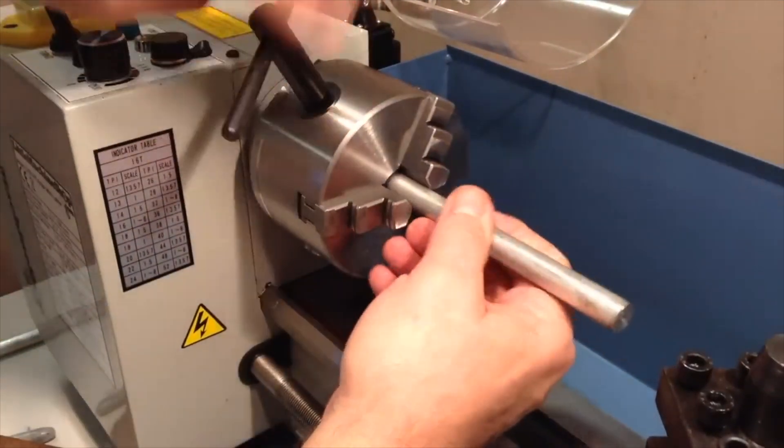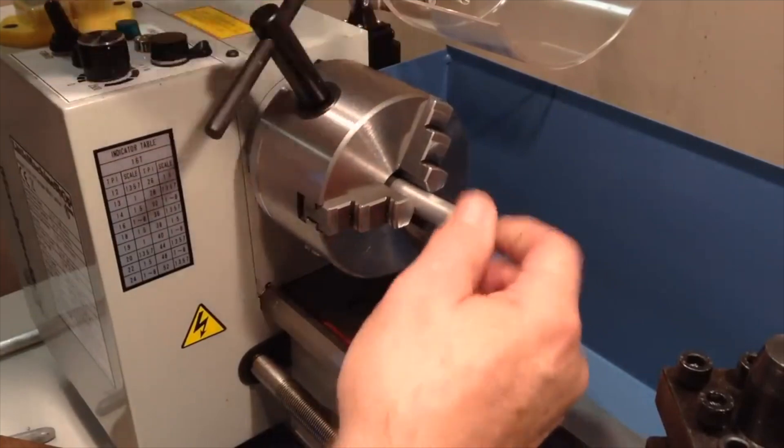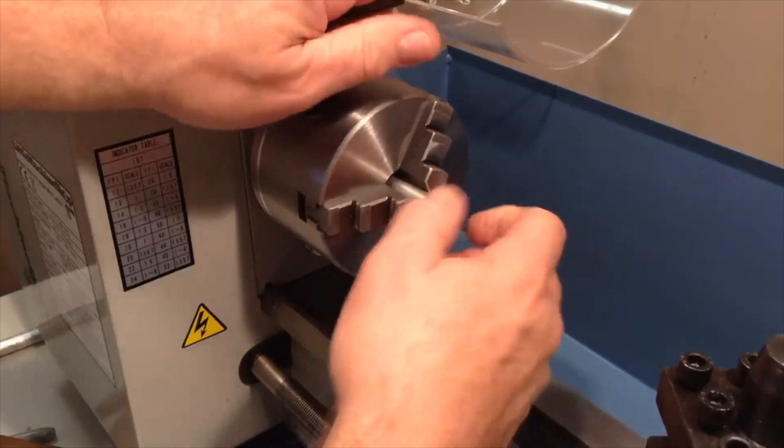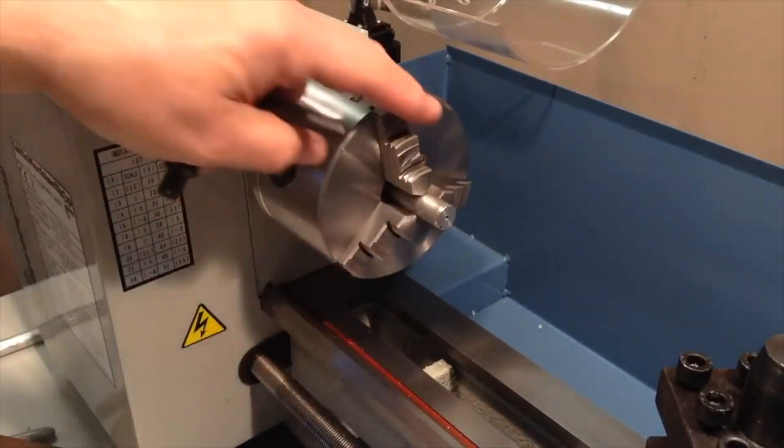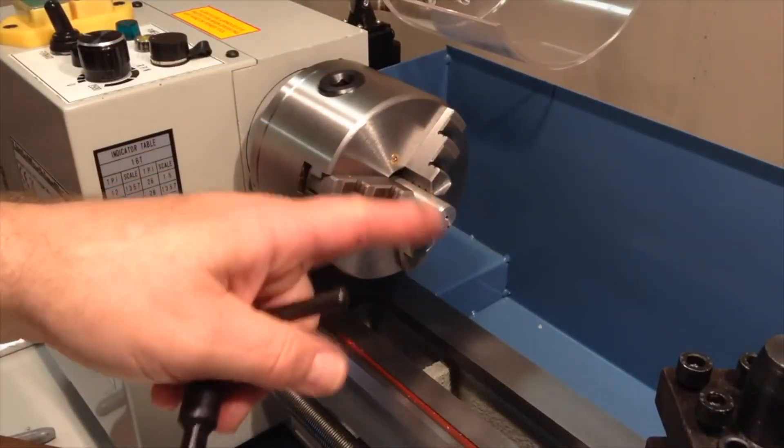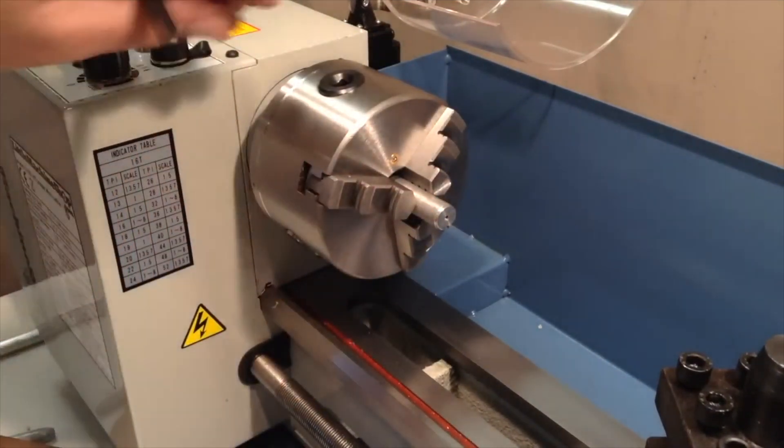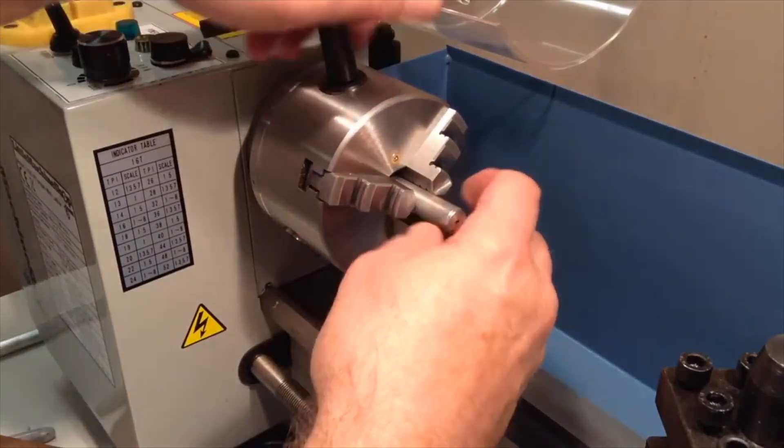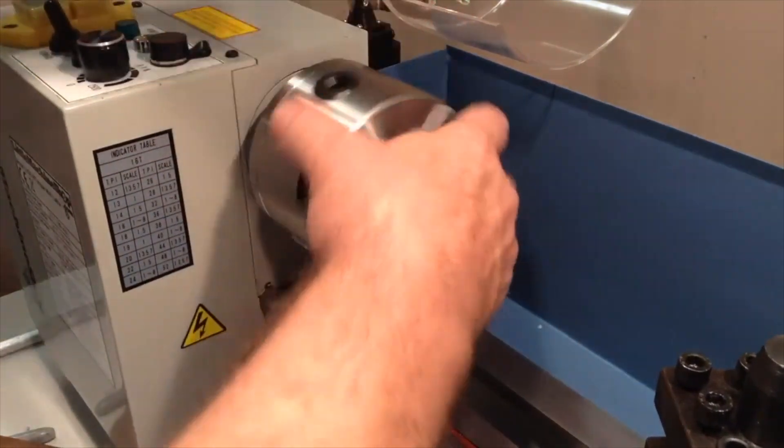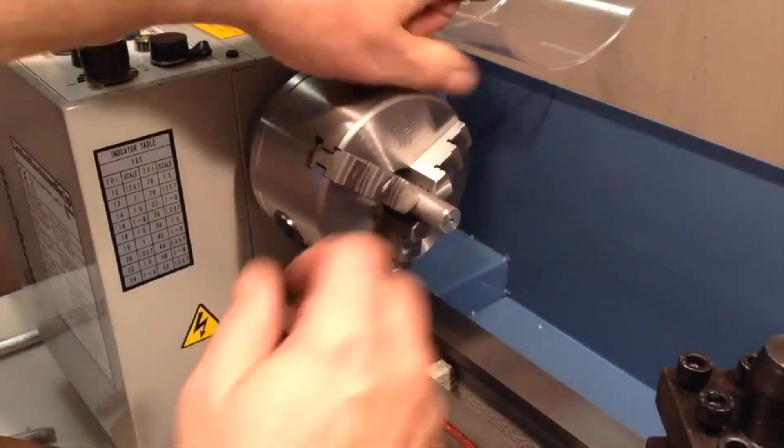But the inside jaws can also grip on the outside surface. In fact probably the most common operating scenario on any lathe and especially on the mini lathe is just like this where you have a workpiece, in this case a half-inch diameter aluminum rod, and you just position it between the jaws and tighten it down.